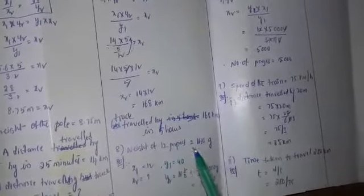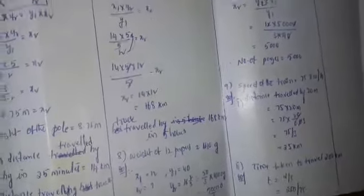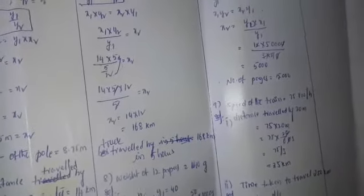Number of sheets is equal to 5,000. See here, 12 papers weigh 40 grams, so 5,000 papers weigh 16 and 2/3 kilograms. Okay, I will see you next class in next video.